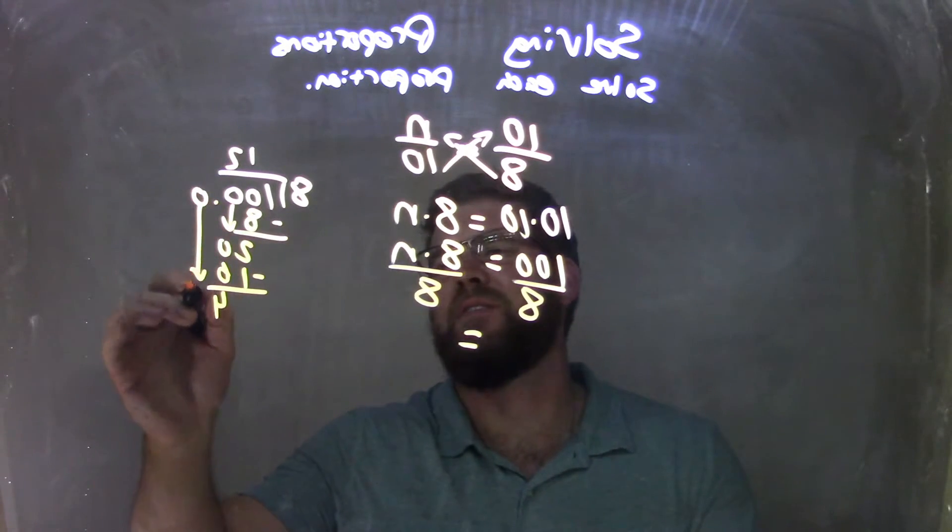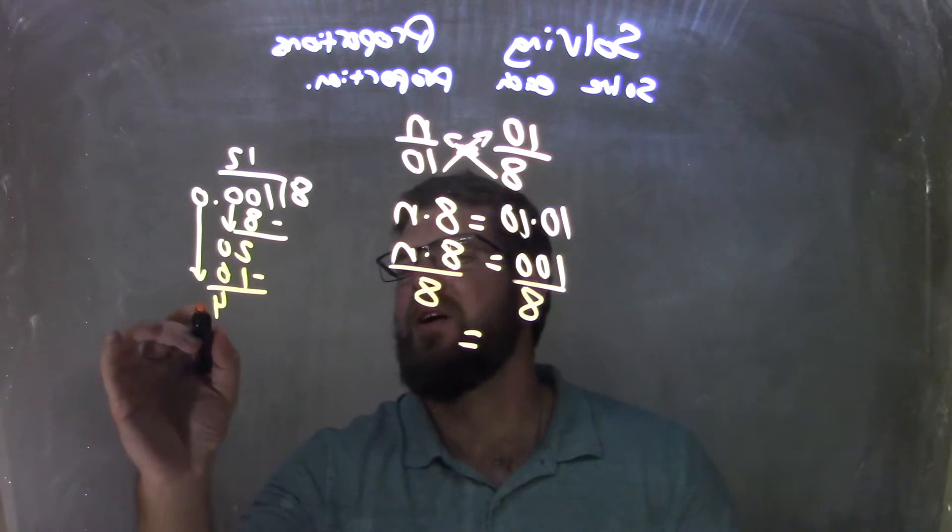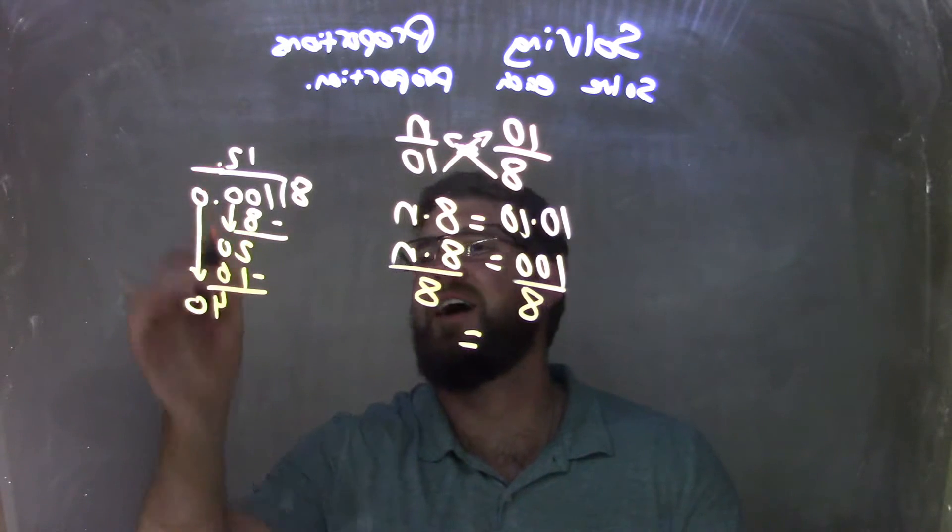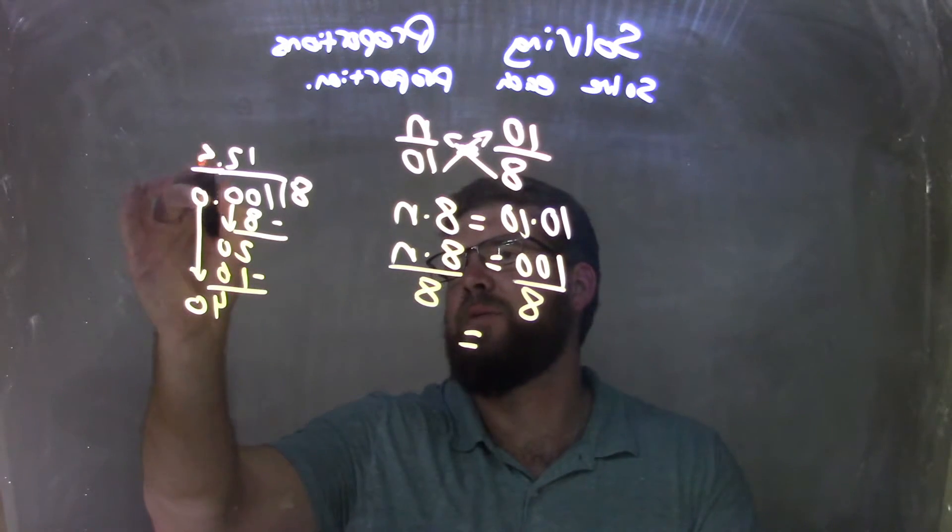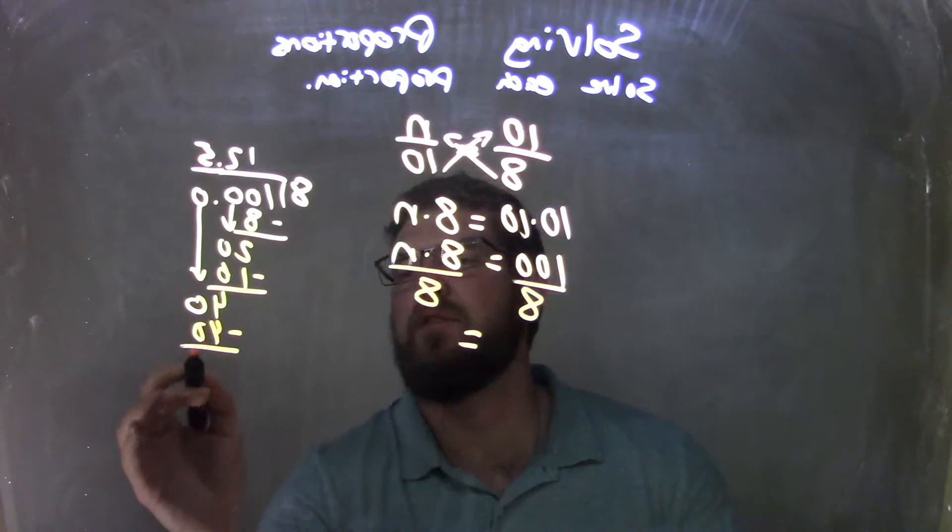Let's bring down the decimal. Bring down the 0 here. 8 goes into 40 how many times? That's going to be 5 times. 5 times 8 is 40. 40 minus 40 is 0. Looking good.